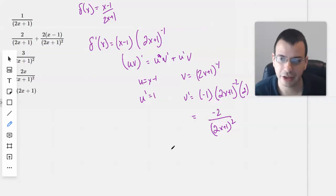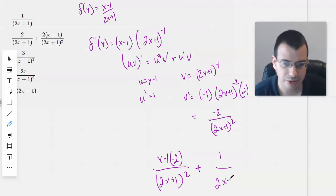Putting it all together, we have u times v prime. So x minus 1 times negative 2 over 2x plus 1 squared plus u prime, which is 1, over 2x plus 1 to the first.